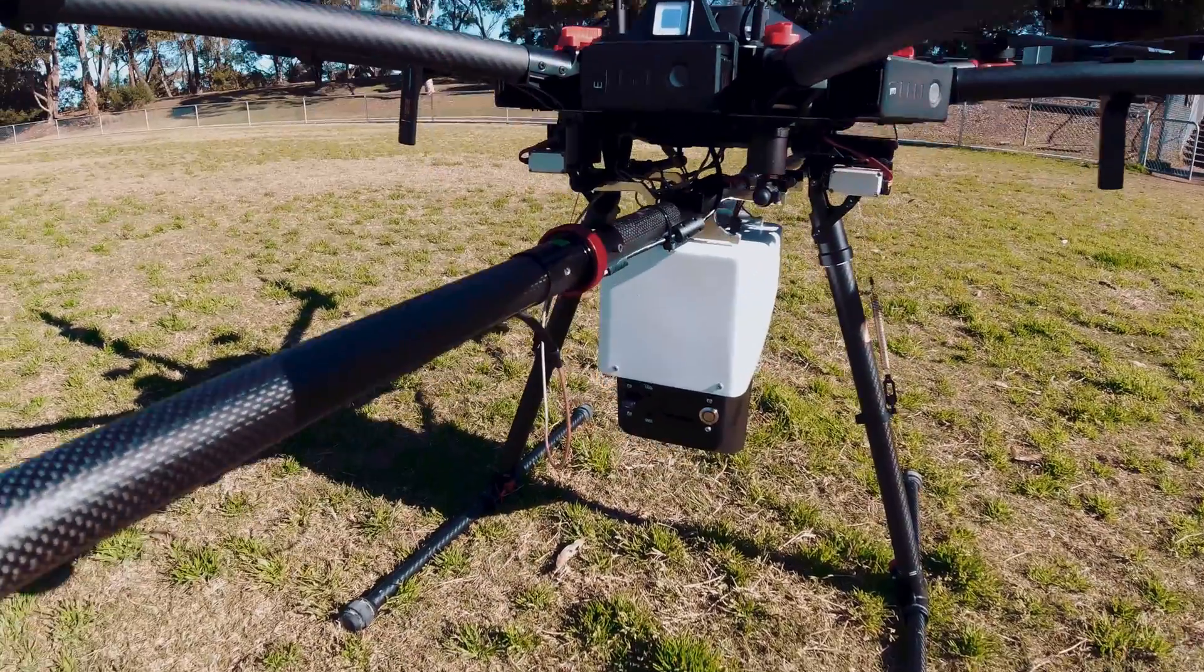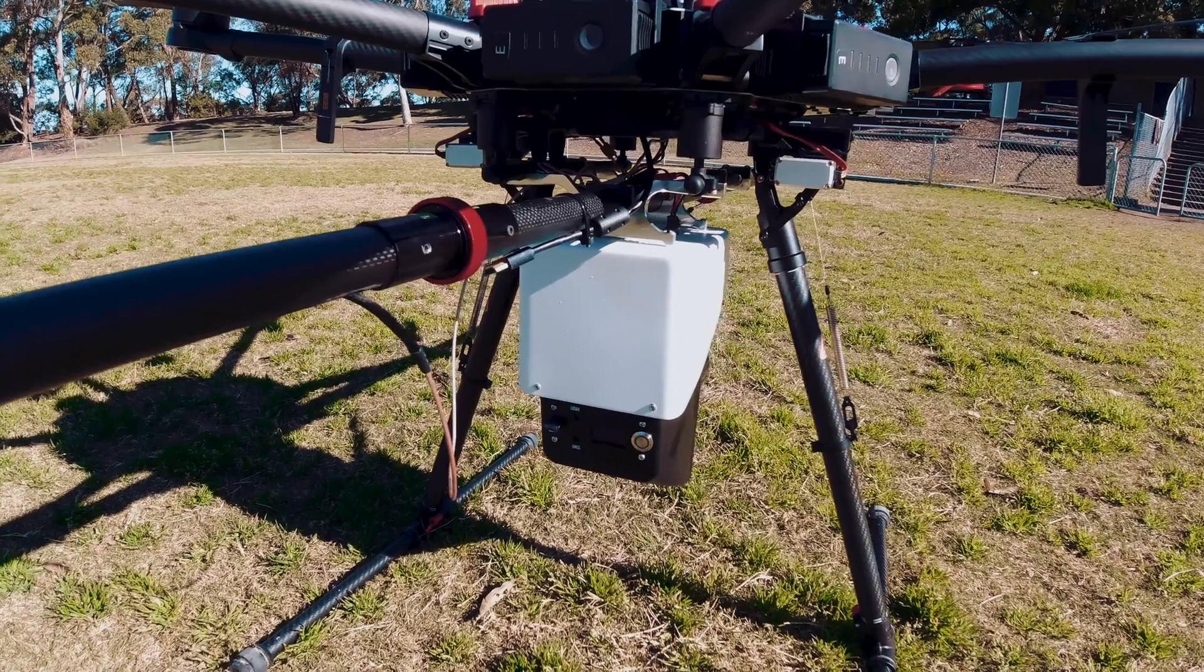The unit itself mounts on the Matrice 600 drone, and it's a very simple mounting. It takes maybe two minutes. It's very easy to operate. You either turn it on or you turn it off. Whenever it's turned on, it's collecting data.